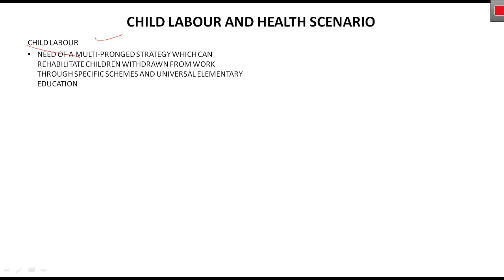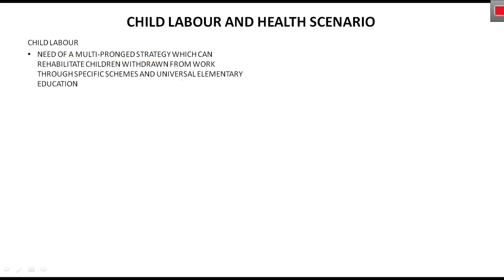इसके लिए we need a multi-pronged strategy which can rehabilitate children withdrawn from work through specific schemes and universal elementary education. ऐसे बच्चे जिनको हमने rescue किया है, उनको हम rehabilitate करेंगे — बहुत सारे schemes से, especially education और nutrition के द्वारा।